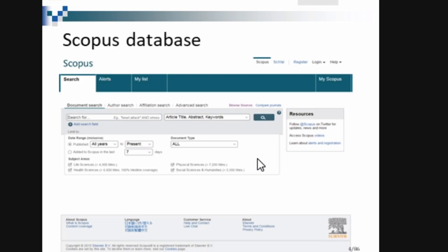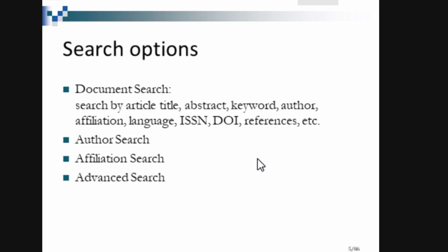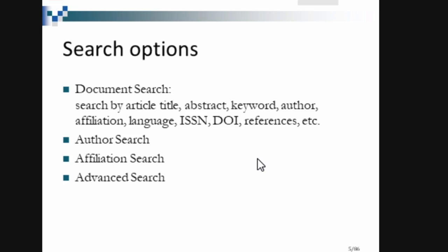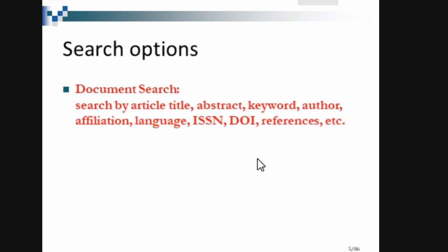This is the homepage of the Scopus database — the homepage will look like this. There are different search options, same as Web of Science, though the interface is different. You have document search by title, abstract, keyword, affiliation, author, language, ISSN, and DOI, as well as author search, affiliation search, and advanced search.